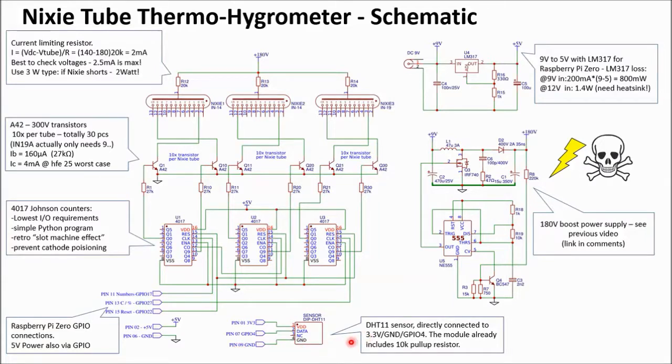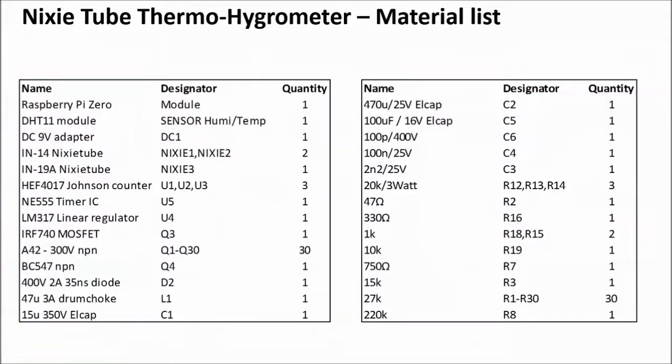Please notice the DHT11 sensor, this is a sensor module, which already has a 10K pull-up resistor. So this is the material list. In total it's 92 components.